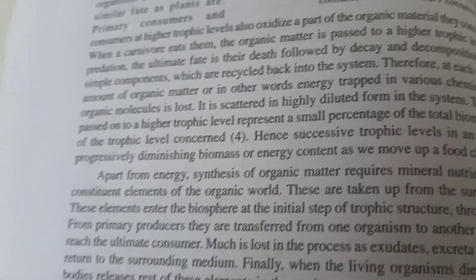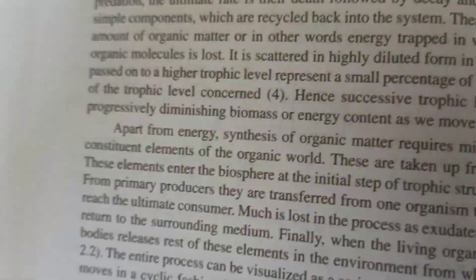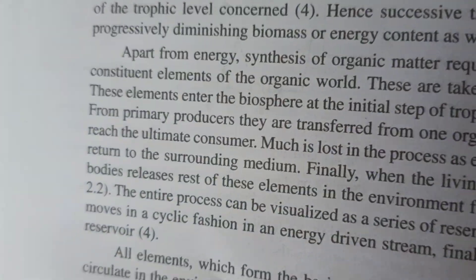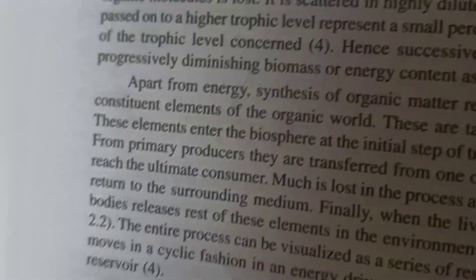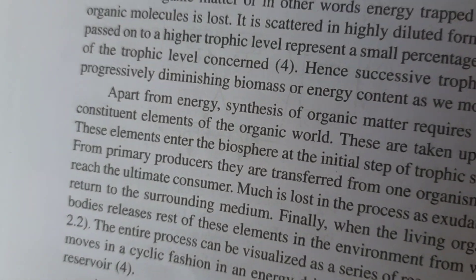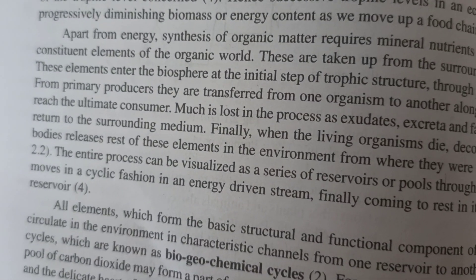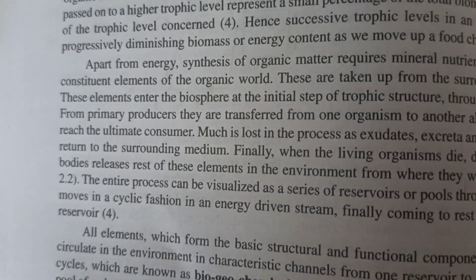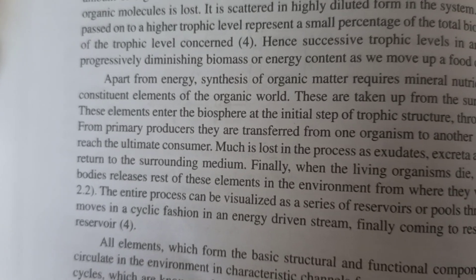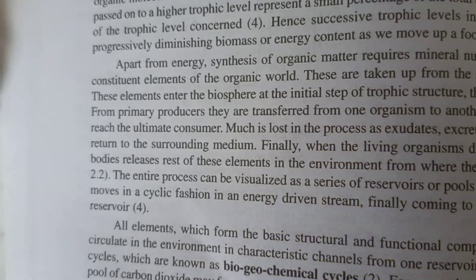If solar energy transfers to the next trophic level, energy is transformed to the third trophic level at an even lesser amount compared to the second level. That is why energy decreases as it moves from one trophic level to another, and the number of trophic levels in an ecosystem cannot exceed 4 to 5.